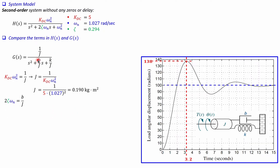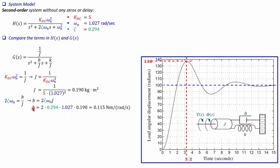Similarly, comparing terms: b over J equals 2 times zeta times omega_n, so b equals 2 times zeta times omega_n times J. With J equal to 0.190, substituting all known values gives b equal to 0.115 Newton meters per radian per second — a different unit than in the translational mechanical system.